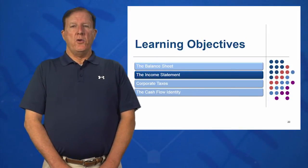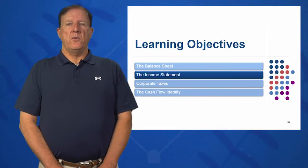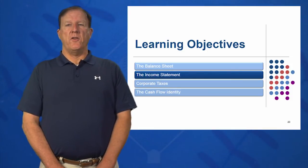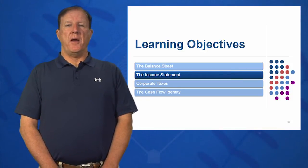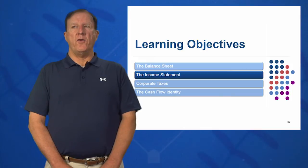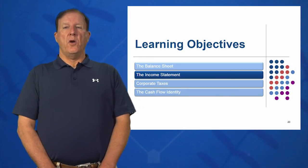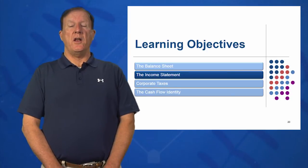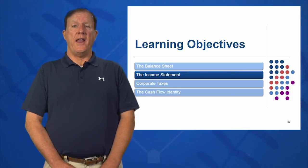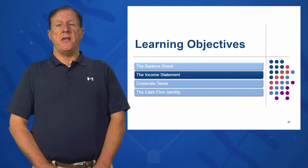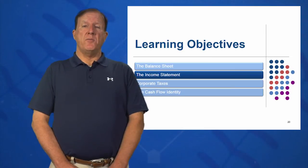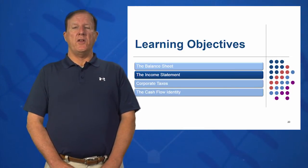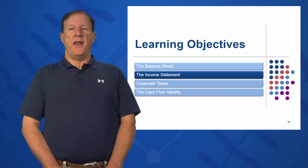In learning objective two, we're going to look at the income statement. All of business revolves around the income statement. Sales minus cost equals net income. Another word for sales is revenues, another word for cost is expenses, and another word for net income might be NPAT, earnings, or profit. The basic equation is sales minus cost equals net income.